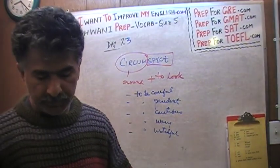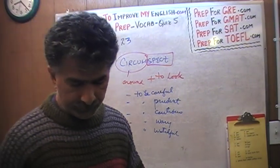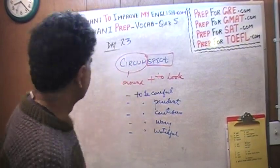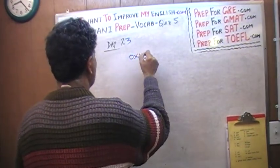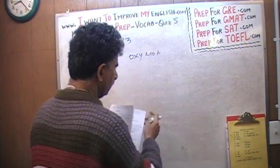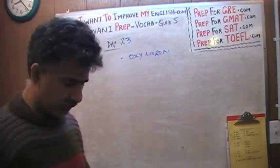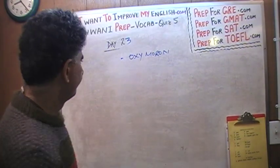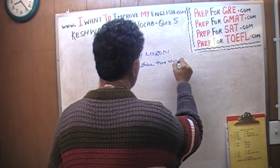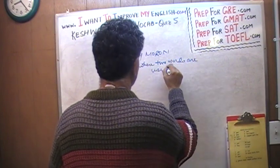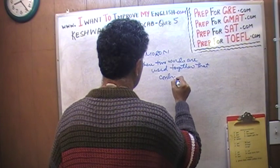Circumspect literally means to look around — to be careful, to be aware of your surroundings. The last word we learned on day 23 was 'oxymoron.' An oxymoron is where you use two words together that contradict each other — two incongruous words used together.